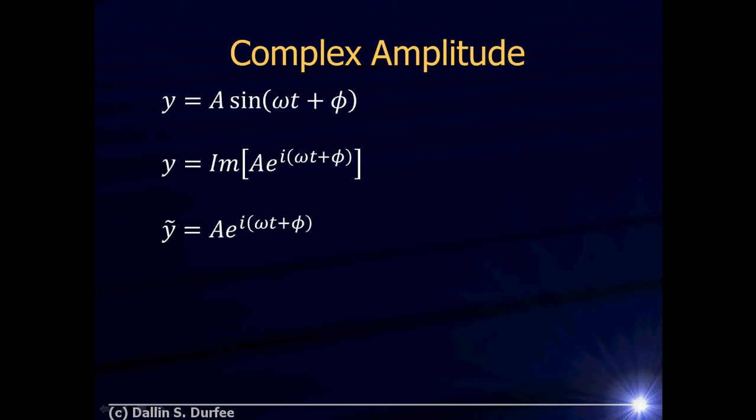That way I don't have to keep writing 'take the imaginary part of'. So I define this thing ỹ, and if I take the imaginary part of that, I get y. But since it's an exponential, I can factor things out. So I can write this as Ae^(iωt) times e^(iφ). So I've separated out the e^(iφ) part.